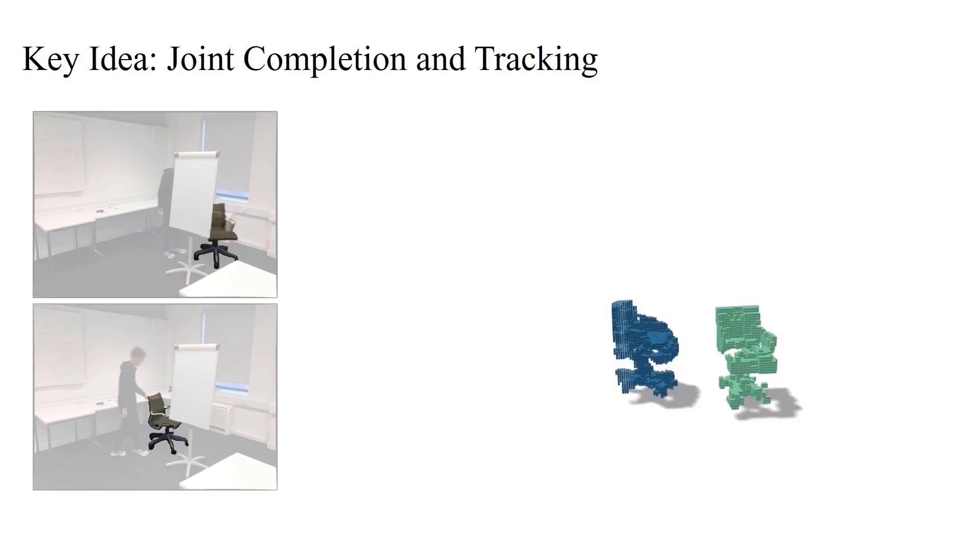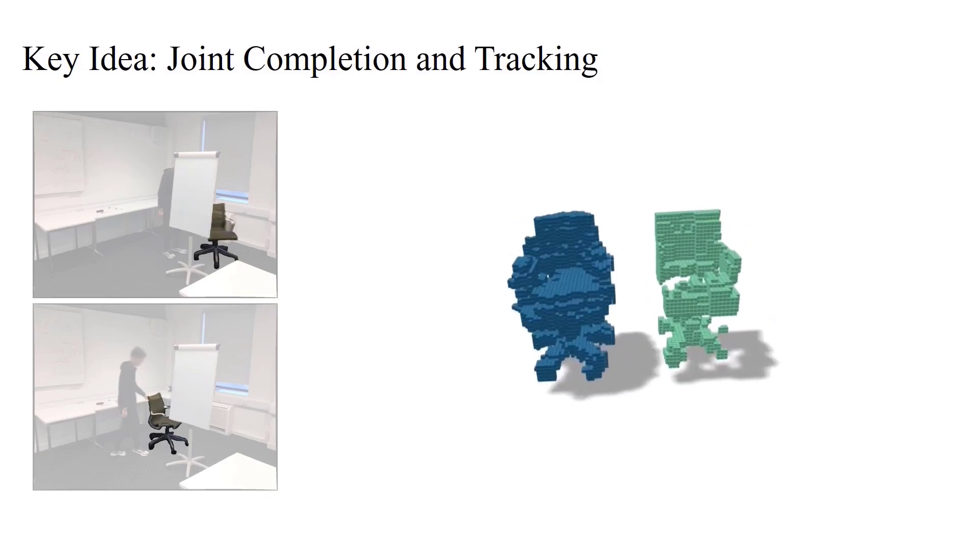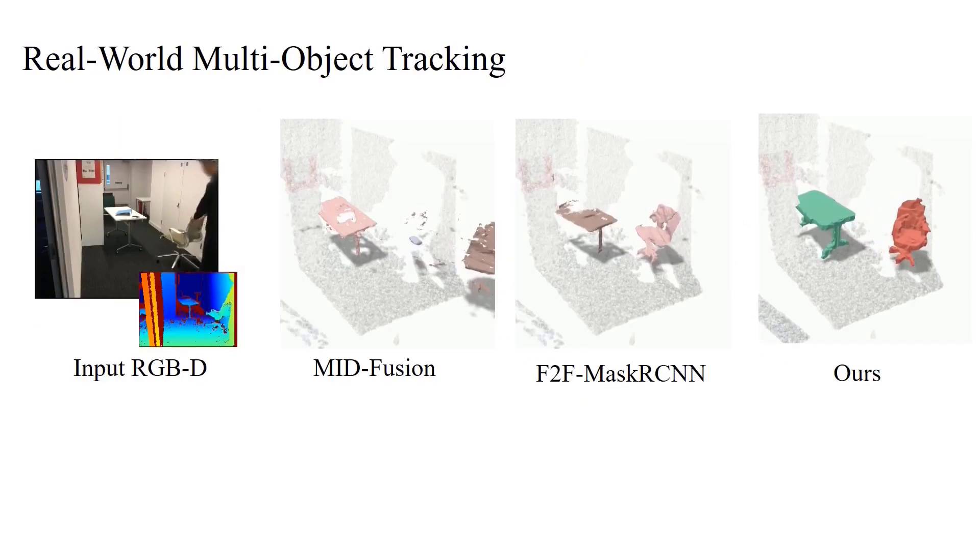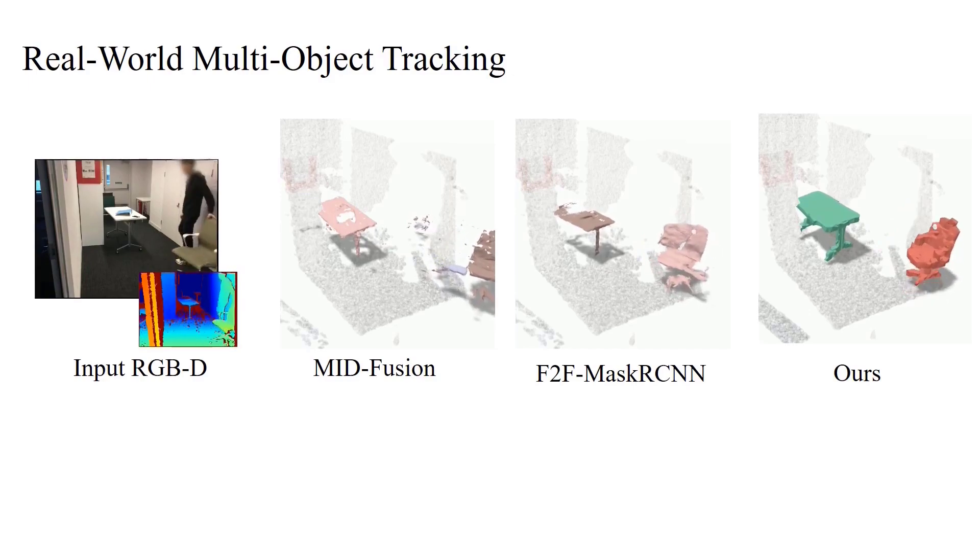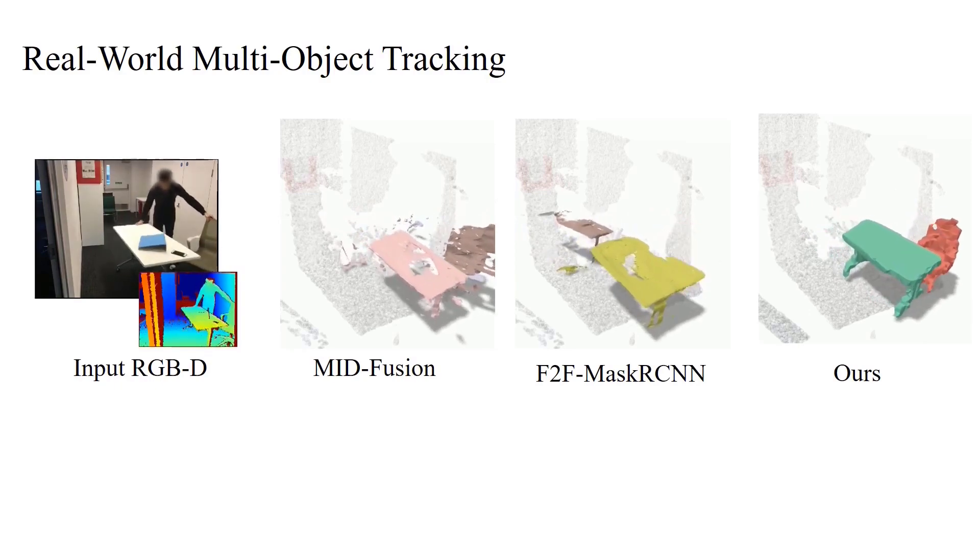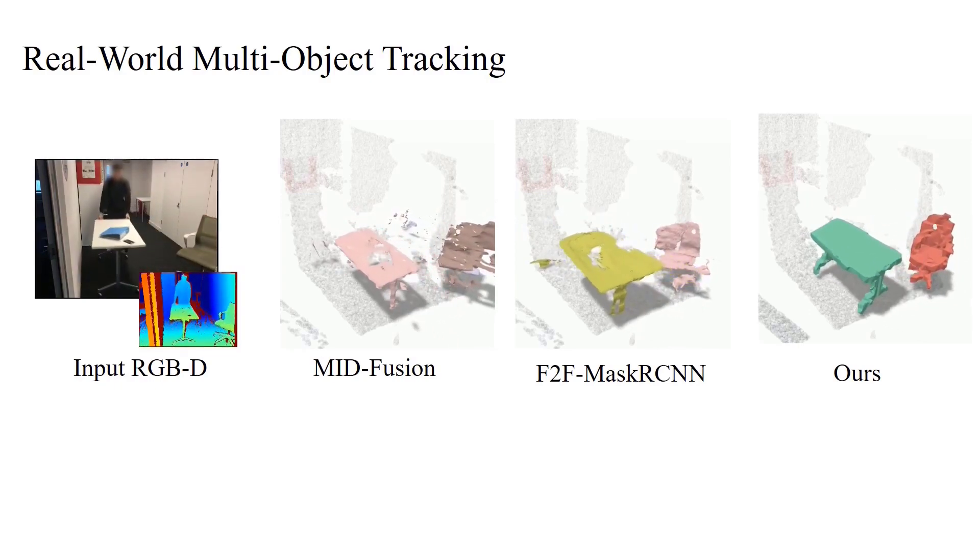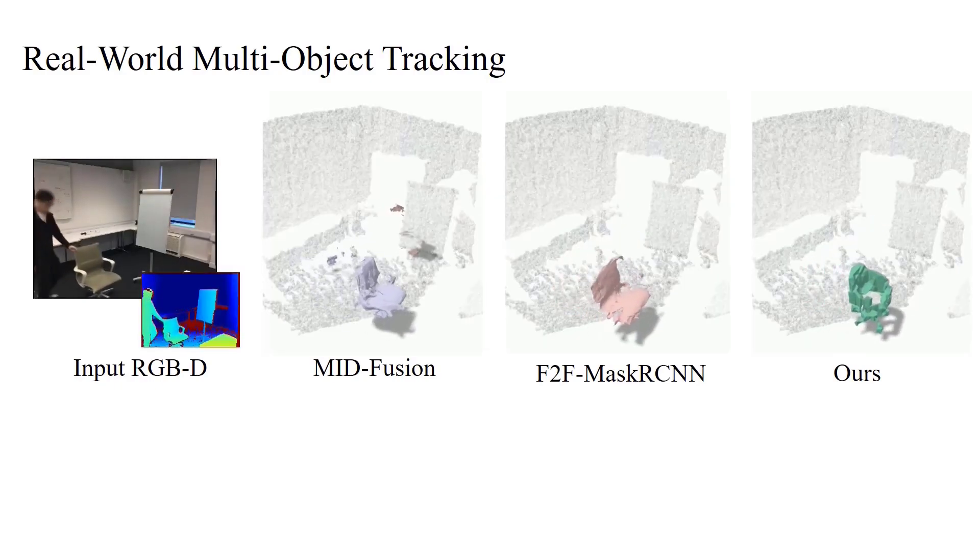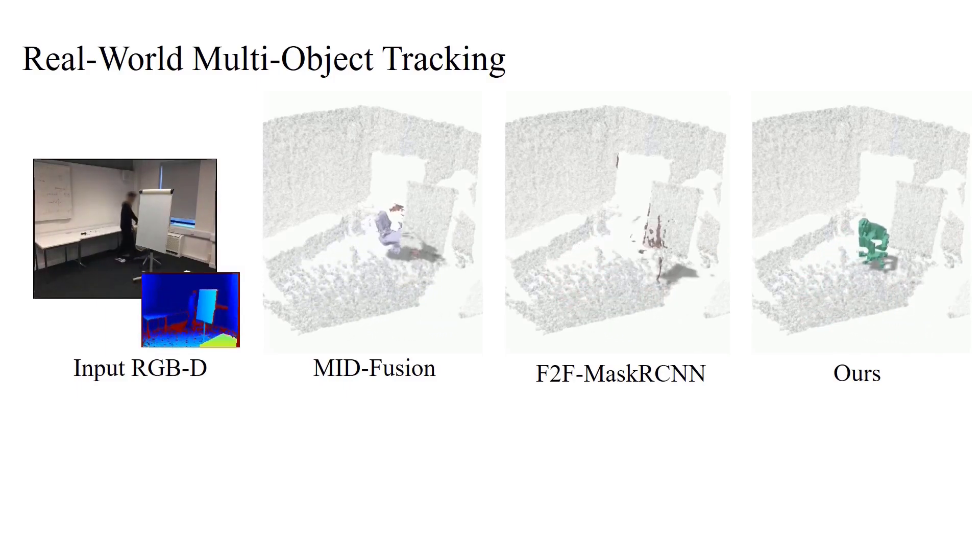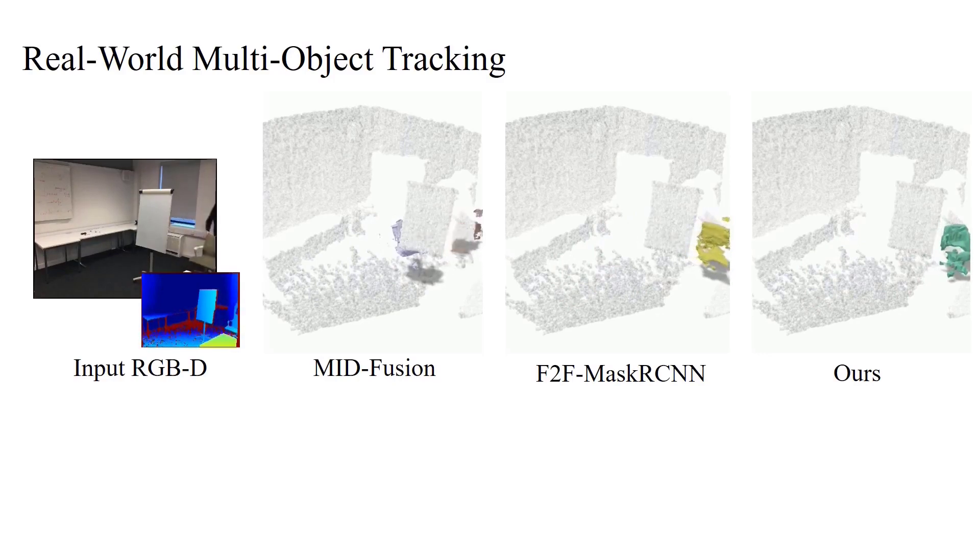Our key idea is to tackle this problem by learning to complete missing object parts in order to maintain persistent object correspondences for robust tracking. We compare our method with state-of-the-art methods such as MID-Fusion and a Mask-RCNN-with-ICP-based frame-to-frame approach. As our approach not only integrates observed surfaces but also hallucinates missing object regions, we also obtain representative object shapes.